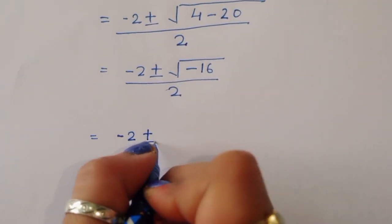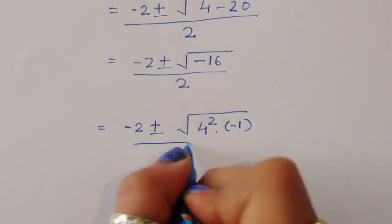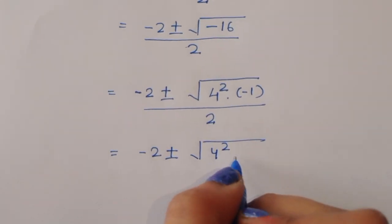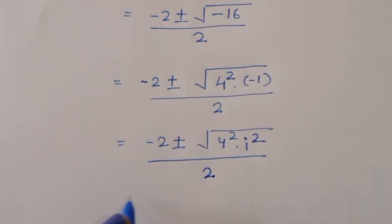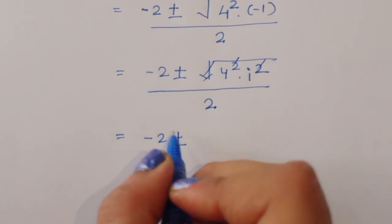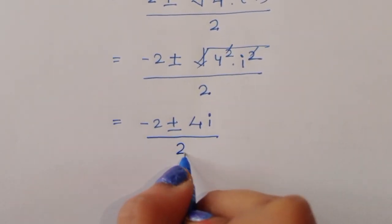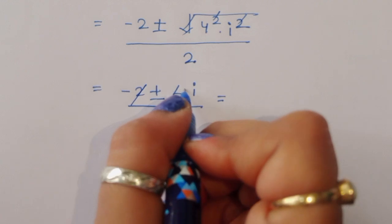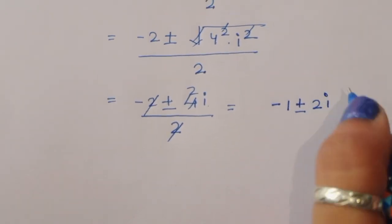So k equals minus 2 plus or minus the square root of negative 16, divided by 2. We can write negative 16 as 4 squared times negative 1. Since negative 1 is i squared, this becomes the square root of 4 squared times i squared, which simplifies to plus or minus 4i. So k equals (minus 2 plus or minus 4i) divided by 2, and dividing through by 2 gives k equals minus 1 plus or minus 2i.